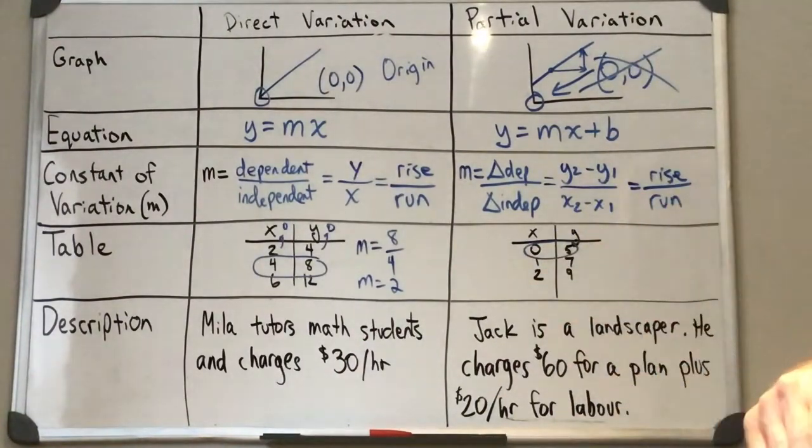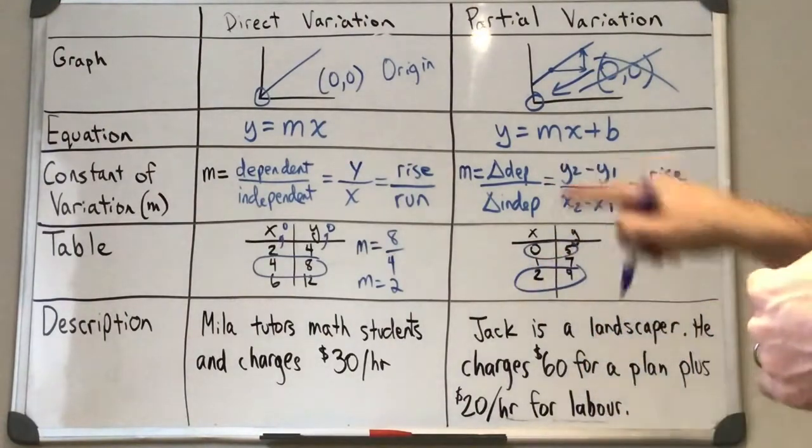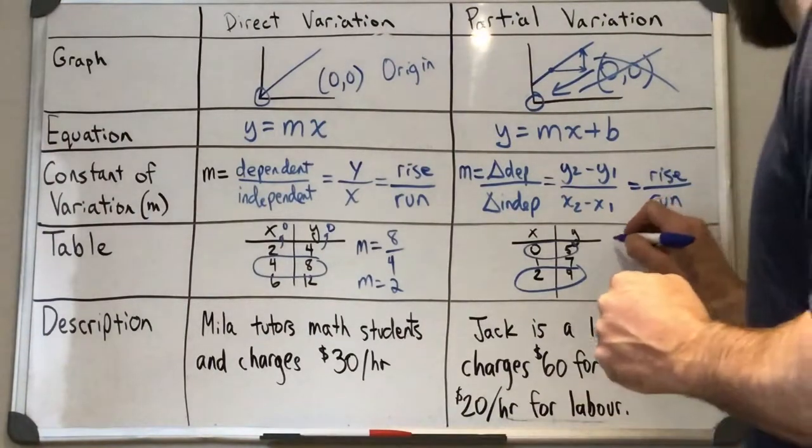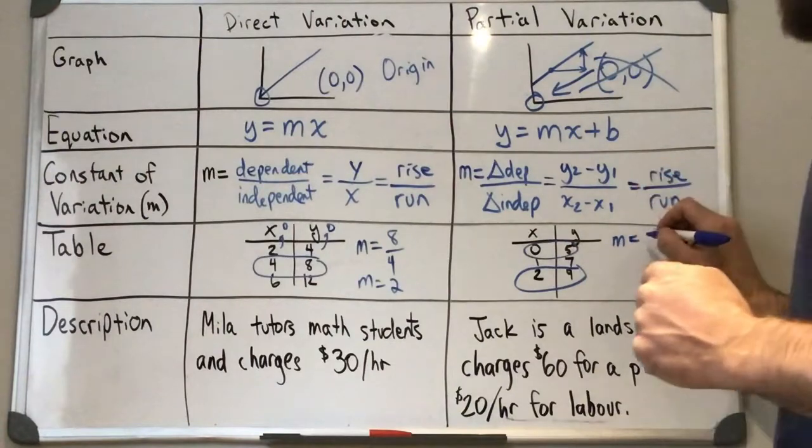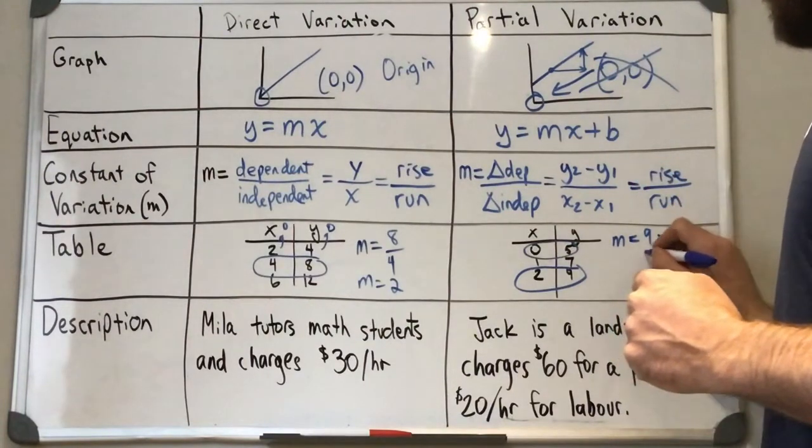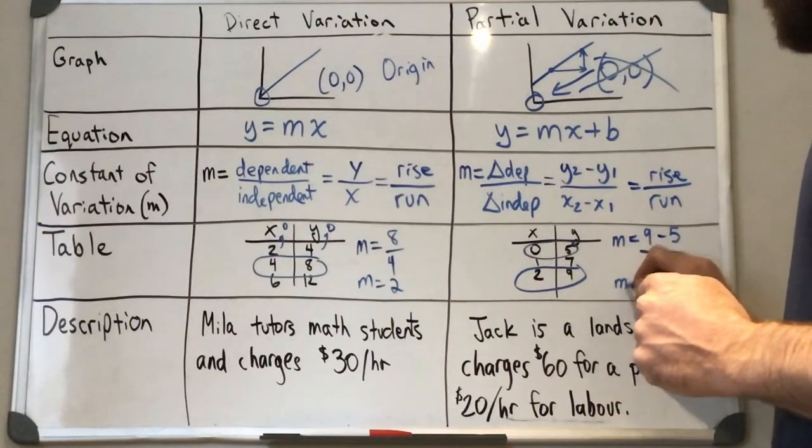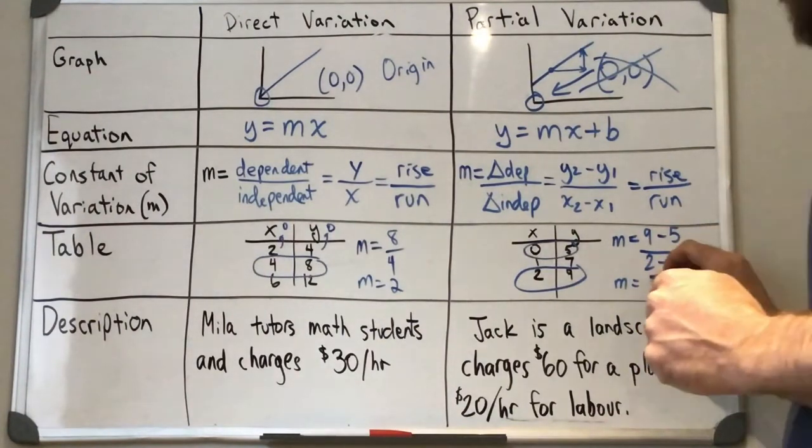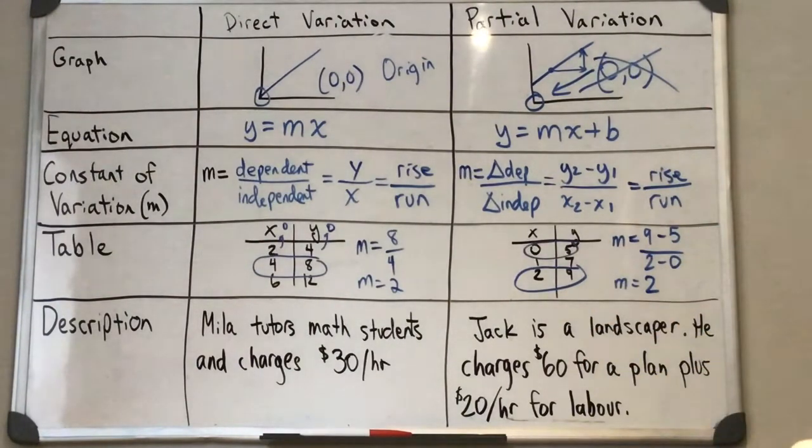Since I already have this one circled, I'll use this as one of my two points that I'll need to calculate our constant of variation for a partial variation. So if I take my two y values, nine minus five, and I take my two x values, here we're going to have four divided by two, so then our constant of variation will end up being two here. I kind of skipped a step just because I was running out of room.